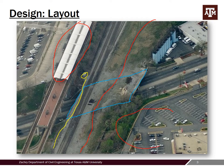The idea was to put the main bridge here, jump over that utility shed, land it on either side, and then have ramps coming down on either side. It's a pretty crude sketch, but you get the idea.